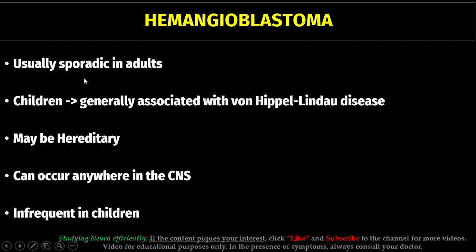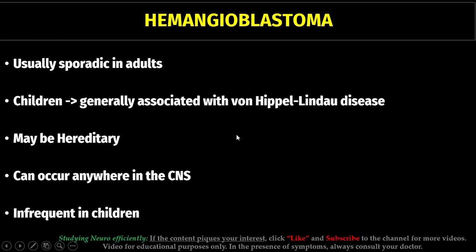Hemangioblastoma can be sporadic or hereditary. In adults, hemangioblastoma is generally sporadic. When we see a case of a child with hemangioblastoma, we should investigate for von Hippel-Lindau disease, as it may be a hereditary case.